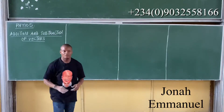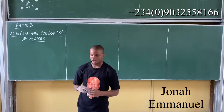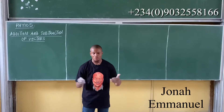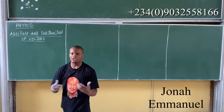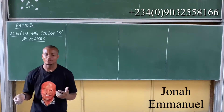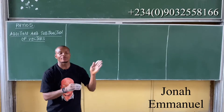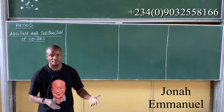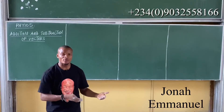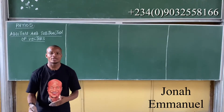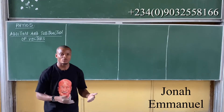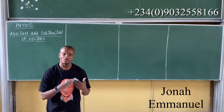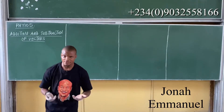Alright, we've got the Addition and Subtraction of Vectors. It's very easy. To add or subtract any 2, 3, or 4 vectors, simply add up their corresponding coordinates — or subtract corresponding coordinates. That's all.